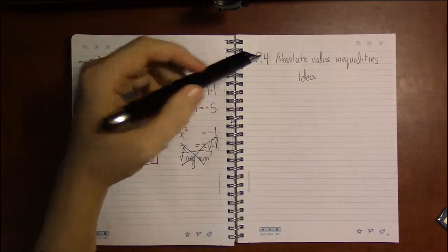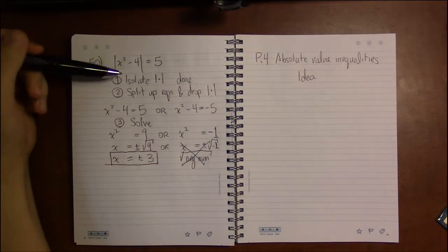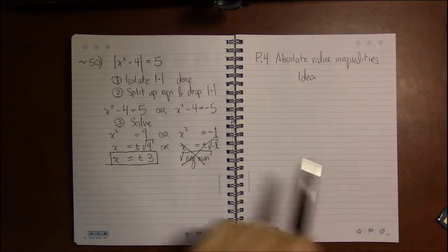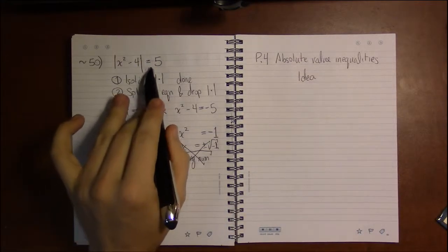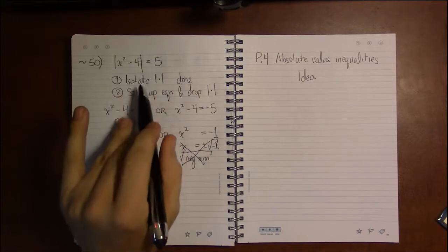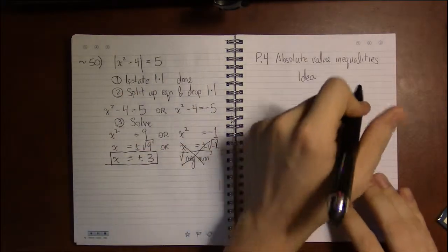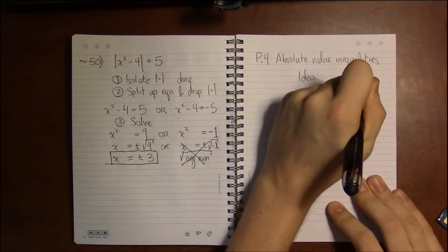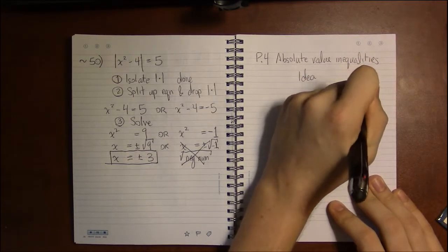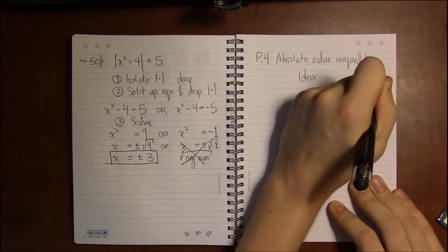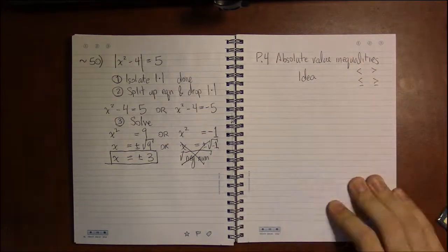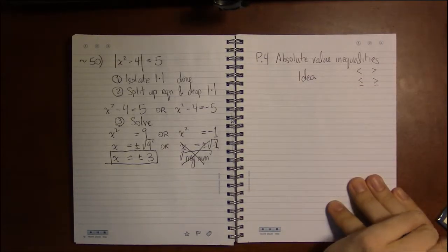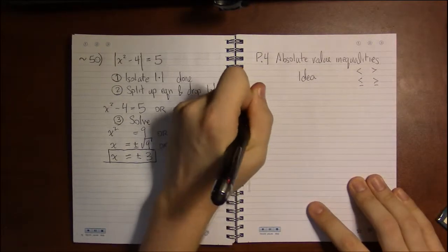Continuing this absolute value discussion, we're going to talk about inequalities rather than absolute value equalities. Inequalities mean that rather than equals signs, we'll be seeing less than, less than or equal to, greater than, or greater than or equal to — that's all we mean when we say inequalities.